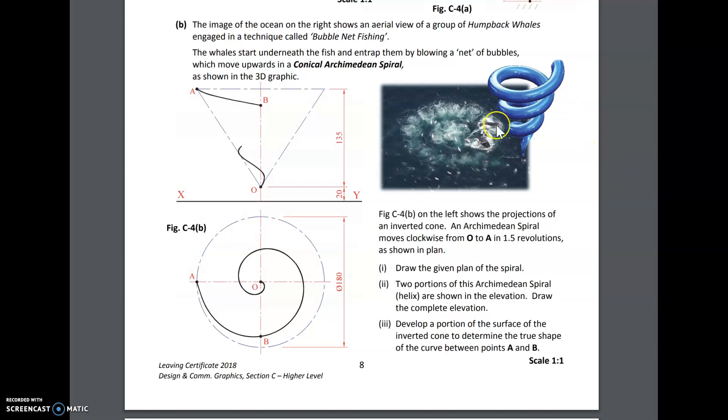So your 3D graphic is here. Figure C4B on the left shows the projections of an inverted cone. An Archimedean spiral moves clockwise from O to A in 1.5 revolutions as shown in plan. What we are asked to do is draw the given plan of the spiral. Two portions of the Archimedean spiral helix are shown in the elevation. Draw the complete elevation. Part 3, develop a portion of the surface of the inverted cone to determine the true shape of the curve between points A and B.